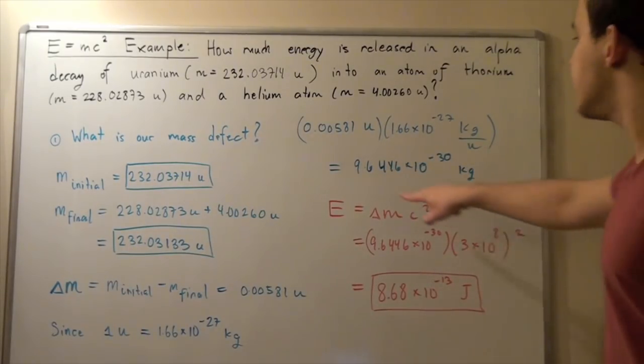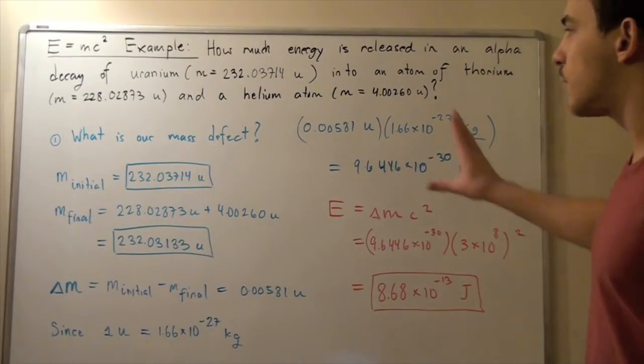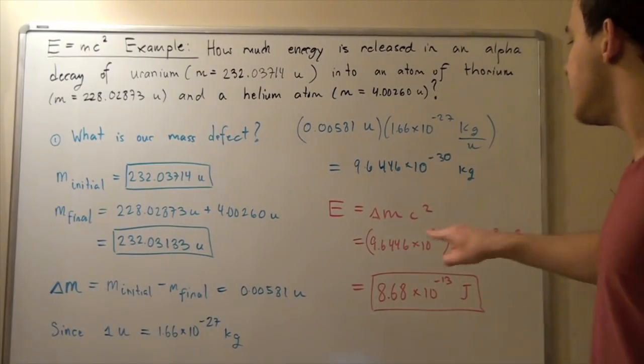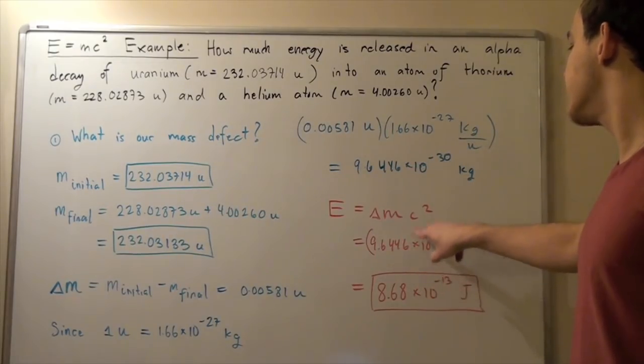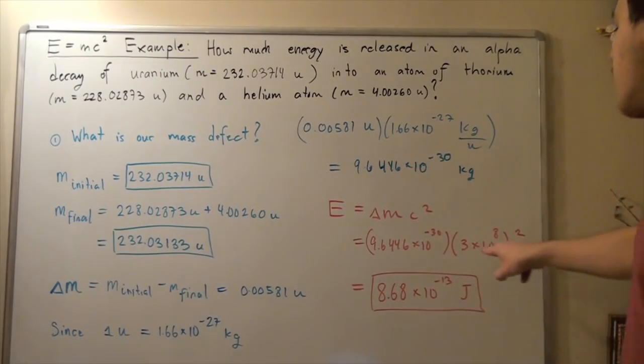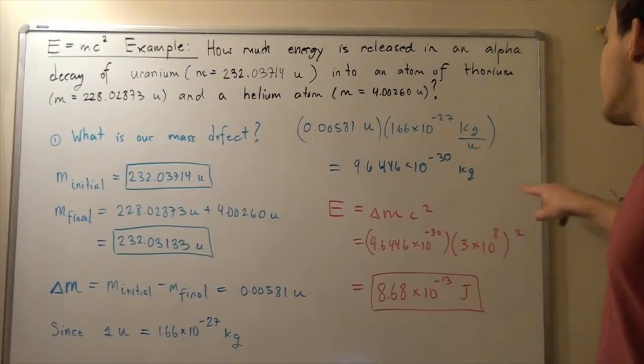We plug our values in, our speed of light and the mass defect we found from part 1. And we see 9.6446 times 10 to the negative 30 kilograms multiplied by 3 times 10 to the 8 meters per second squared.